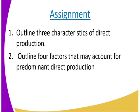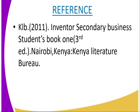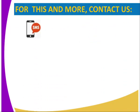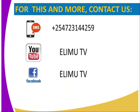Assignment: outline three characteristics of direct production, then outline four factors that may account for predominant direct production. Reference: KRB 2011, Inventor Secondary Business Student Book One. If you have any questions, you can send them via SMS on YouTube, Facebook, and Twitter. Stay tuned to Arim TV. Thank you.